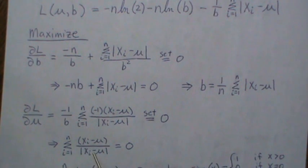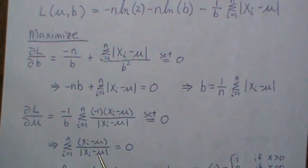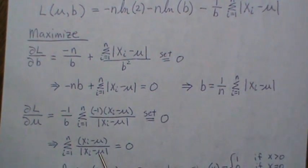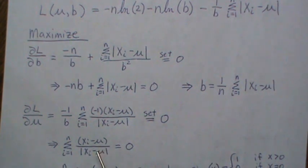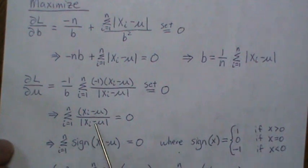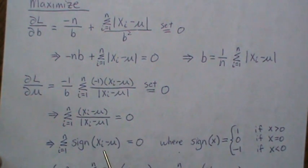And so when mu is not equal to a data point, we get n 1s and minus 1s. And when mu is equal to data point, we leave that term out, and so we get n minus 1 1s and minus 1s. But leaving that term out is equal to setting it to 0. So this can be written in terms of the sign function.